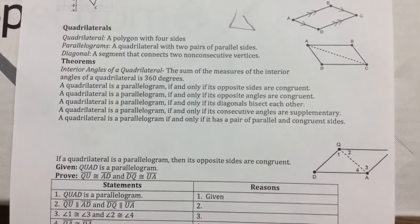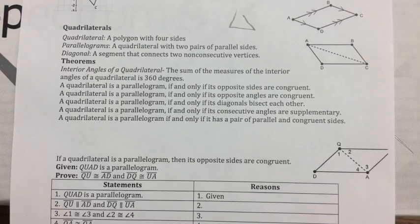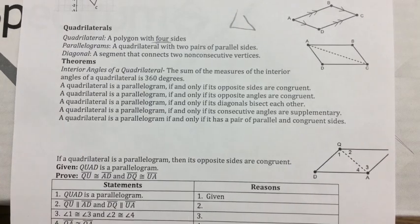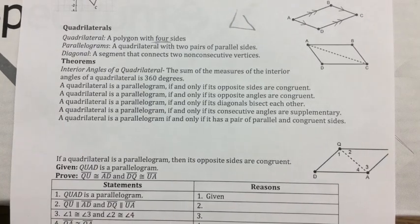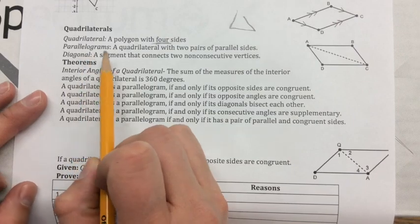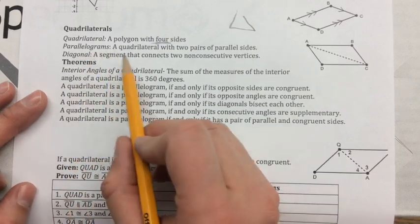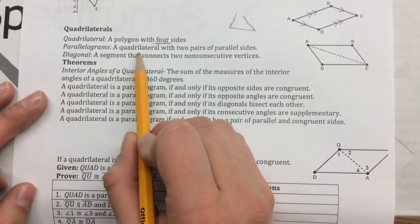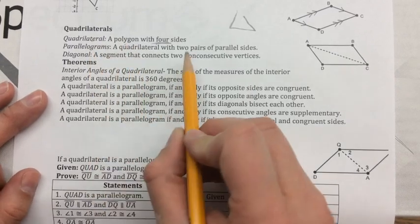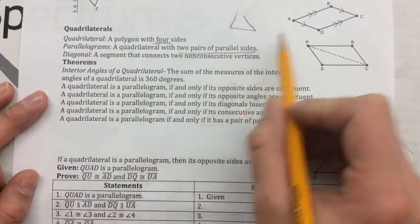With our polygons, we have a whole bunch of different kinds of shapes. The one that we've been focusing on recently is triangles. Then we also have quadrilaterals, which are ones with four sides. We also have a specific kind of quadrilateral that we're going to focus on today — it's called a parallelogram. A parallelogram is a quadrilateral, meaning that it's also a polygon, with two pairs of parallel sides.